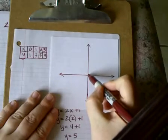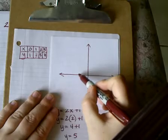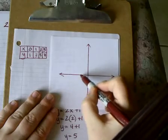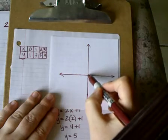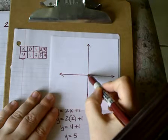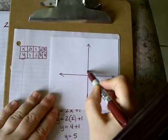My first ordered pair is 0, 1. The x indicates how much I move to the right or to the left, and the y indicates how much I move up or down. Starting at 0, 0, I'm going to go over 0 and up 1 and put a point.